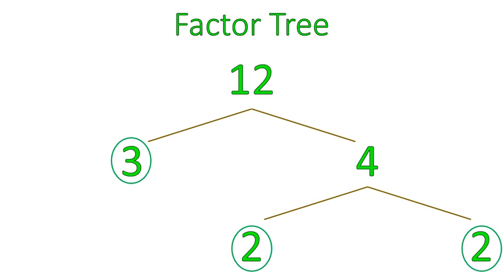Now we have our factor tree, and it shows us that 3 times 2 times 2 is equal to 12. And that's true. These are prime numbers that multiply together to give us 12. Let's do another factor tree.